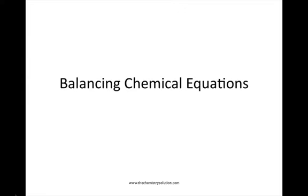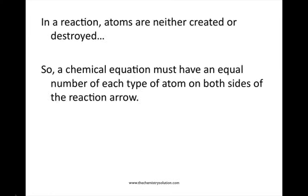Hello and welcome to Chemistry Solutions. This tutorial is on balancing chemical equations. In a chemical reaction, atoms are neither created nor destroyed, so this means that a chemical equation must have an equal number of each type of atom on both sides of the reaction arrow.